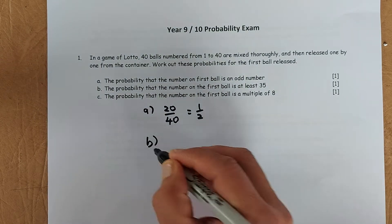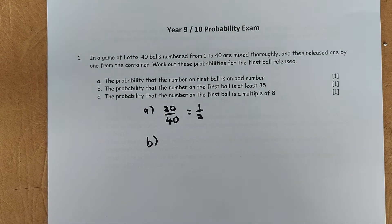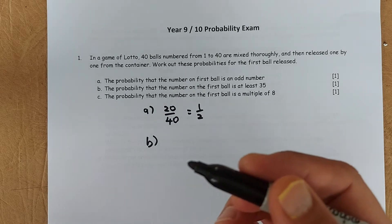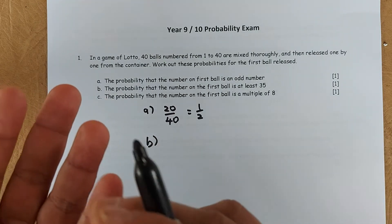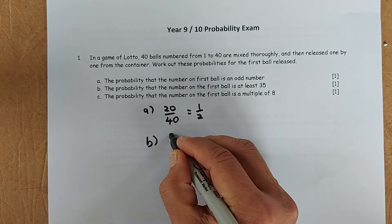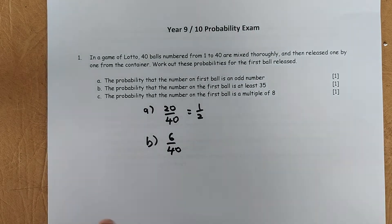Second question. What is the probability that the first ball is at least 35? So there are 40 balls. So 35, at least 35 means 35 is included. So it is going to be 35, 36, 37, 38, 39, 40. So the answer is going to be 6 over 40. And that will do. You don't have to simplify in a probability question.